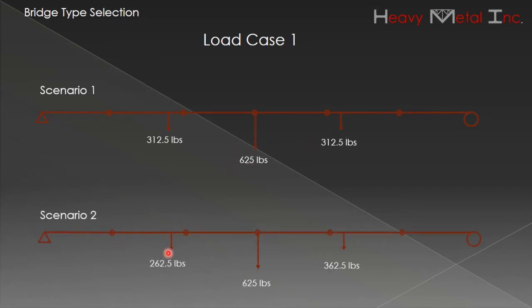Scenario 2 is based on the S6 loading from the previous table, causing point loads of 262.5 pounds, 625 pounds, and 362.5 pounds.